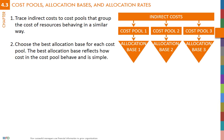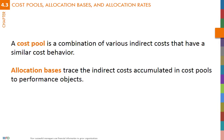Allocation bases trace the indirect costs accumulated in cost pools to performance objects. To get good cost estimates and prevent distortions, allocation bases should reflect how performance objects impact the total cost of resources in a cost pool. This is not always simple, and sometimes it is hard to find an appropriate allocation base or difficult to measure it.